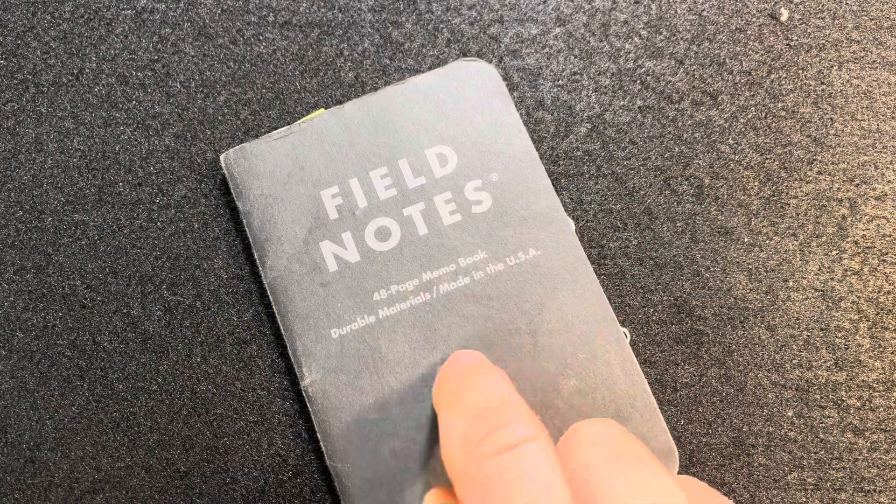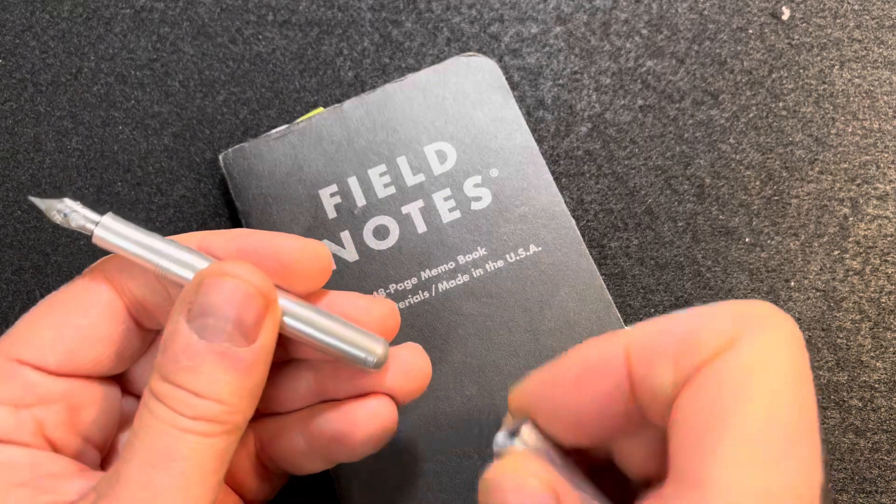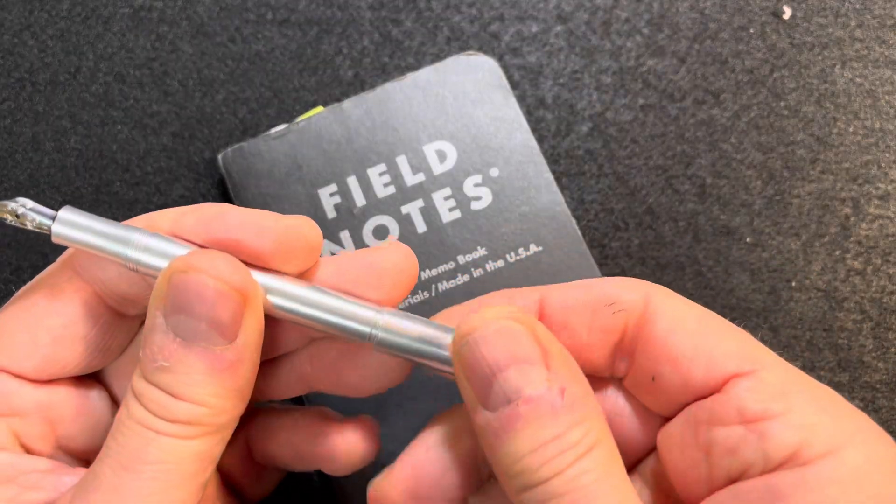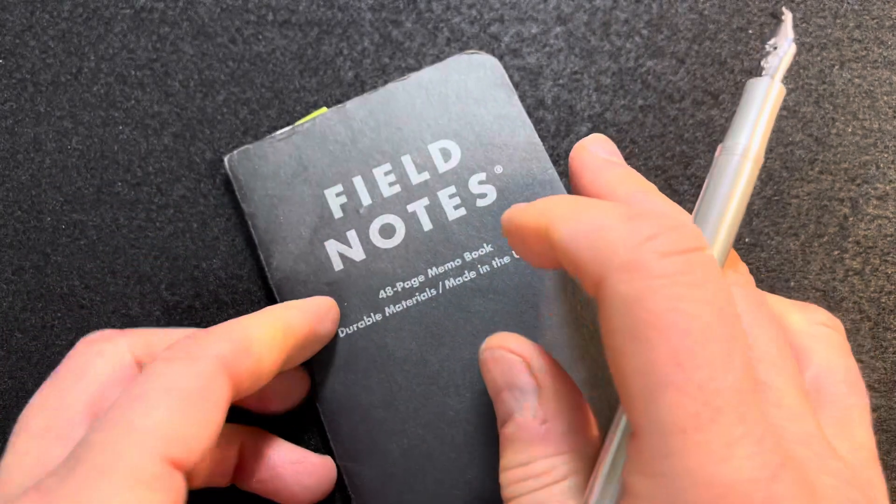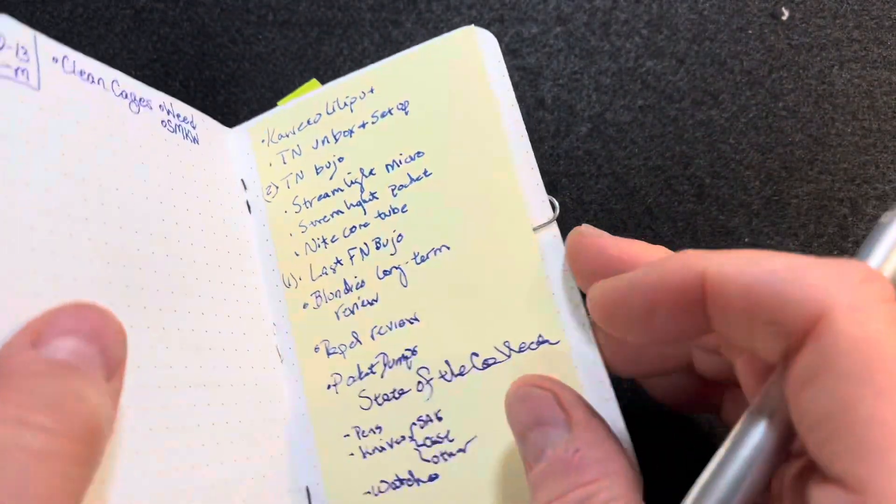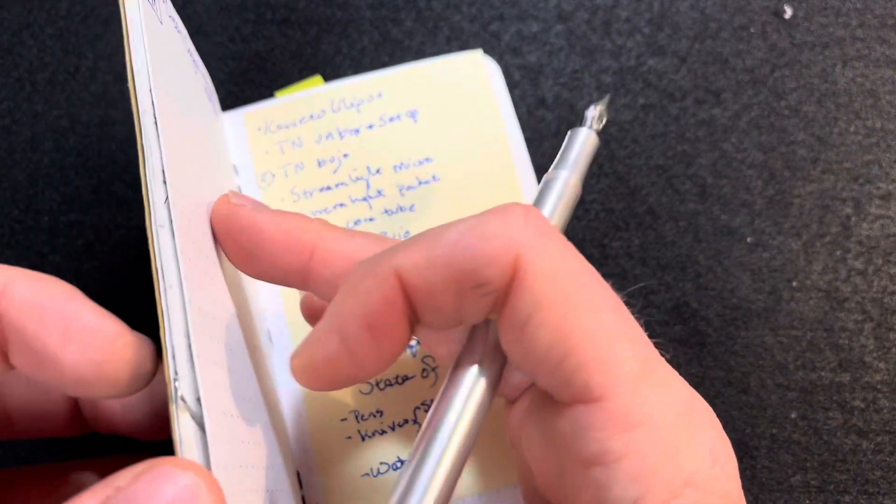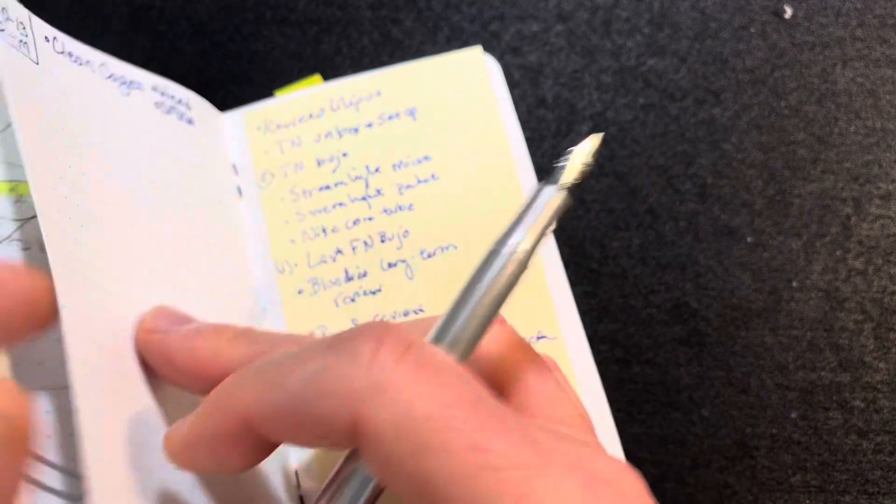Let's try it out in my little Field Notes bullet journal. If you haven't seen those videos, I've got a playlist on how to set up a bullet journal in a Field Notes. There's no room for stickers or stamps though, it's just a bullet journal. See if I can find a blank piece of paper in here.